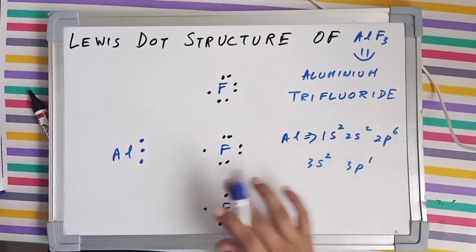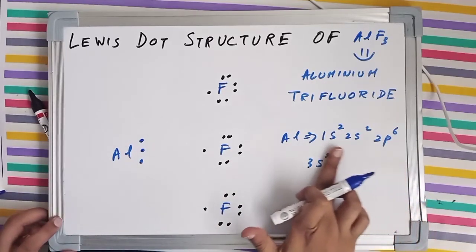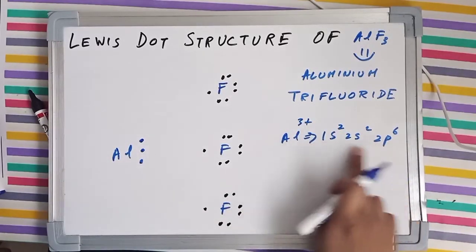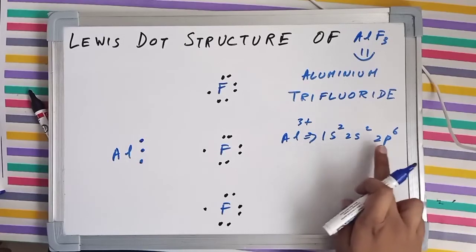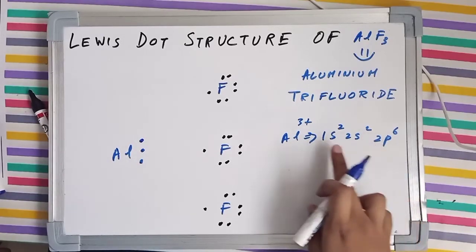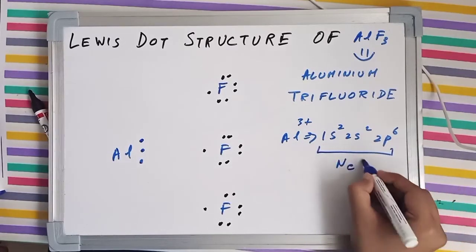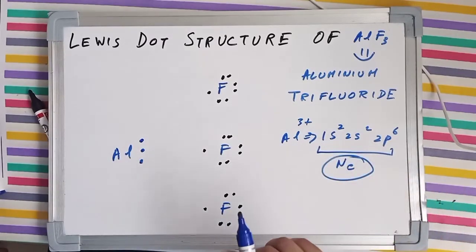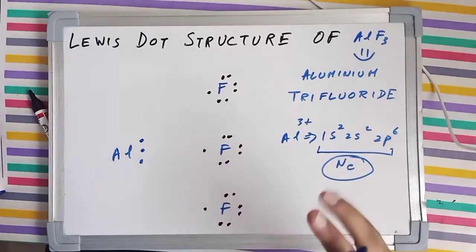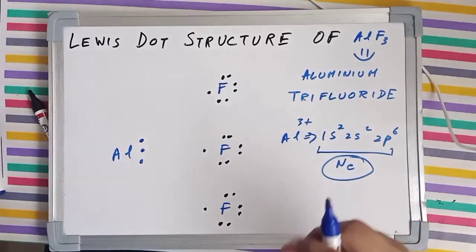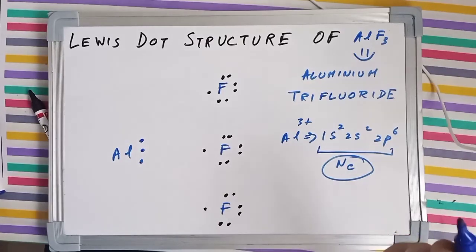So aluminum says yeah ok, I am going to remove this and now aluminum has gained 3 positive charge. Now if you see carefully 1s2, 2s2, 2p6, it is the inert electronic configuration of neon. So aluminum 3+ now actually gains his consciousness and says this is pretty cool. I am going to have an inert configuration by just simply donating my electrons. I am going to be stable in my life.